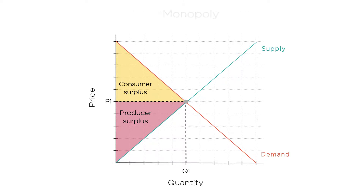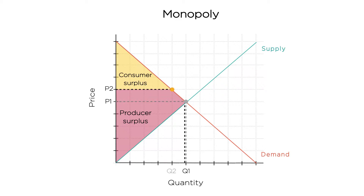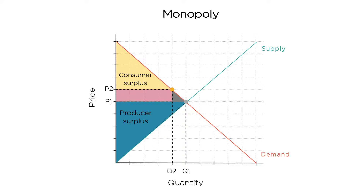Now think about what a monopolist would do in this market. He would set a higher price — perhaps up here at P2, where consumers are only willing to purchase Q2 units. At this new price, consumer surplus is smaller, as you can see here. But producer surplus has grown, greater than it was under perfect competition. And clearly, total surplus has gone down. We've lost this triangle that used to be part of the surplus. This is the deadweight loss of monopoly.